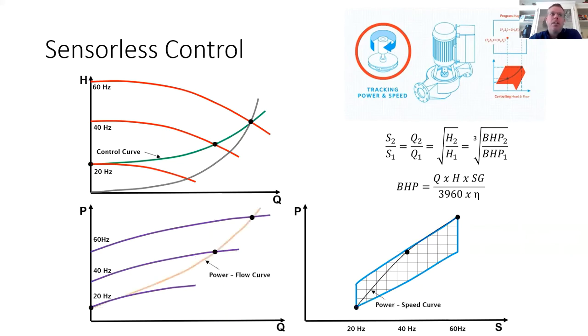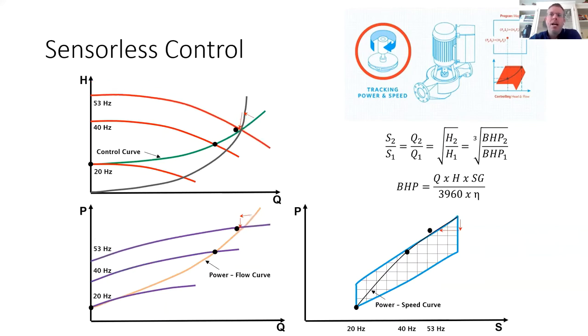And so as valves start to close out in the system, your flow is going to drop and your head is going to increase, but it's going to be in a square root relationship. So the resulting power consumption at that given speed is actually going to drop. So that's going to take you off the power-speed control curve, and in order to get back onto the control curve, the pump controller will slow down the speed of the pump until the appropriate power consumption is reached via their map.